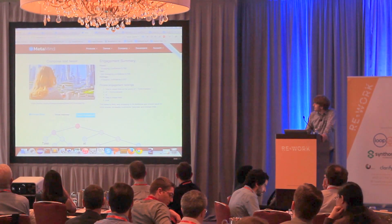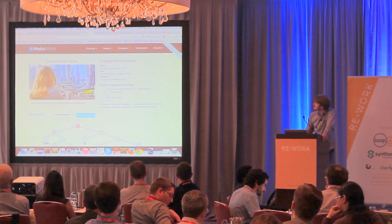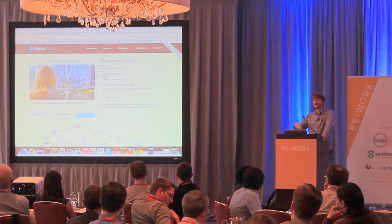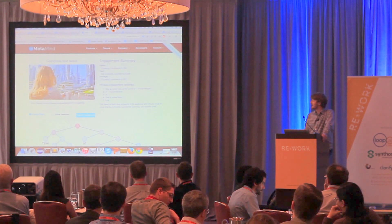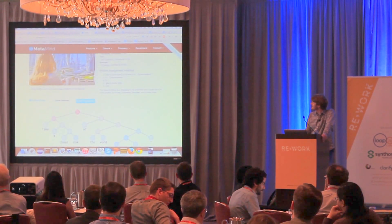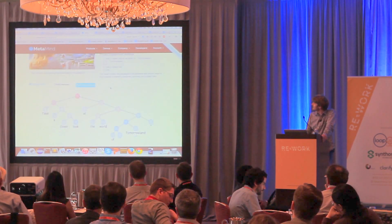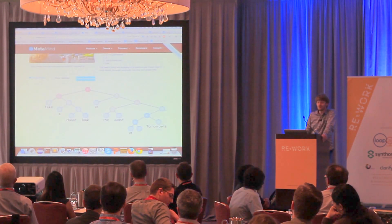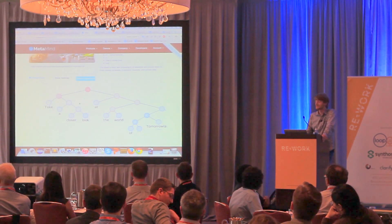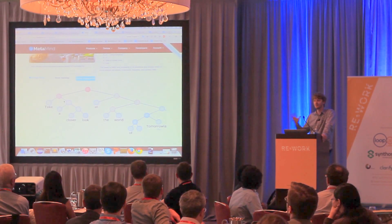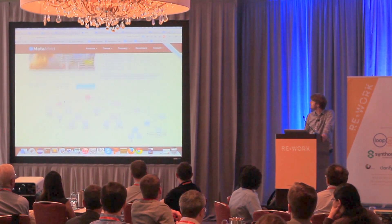We looked at a bunch of tweets and social media messages, and now we can ask the algorithm: before I send this tweet out, will it create a lot of clicks, favorites, retweets, and likes? It turns out this tweet — "Take a closer look at the world of Tomorrowland" — is problematic. People don't like to be told what to do on Twitter. "Take a closer look," "go for a walk," "you've got to see this" — people don't necessarily like to be told what to do.